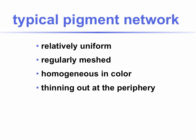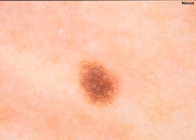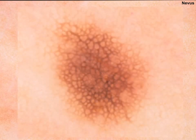The typical pigment network is relatively uniform, regularly meshed, and homogeneous in color. It thins out at the periphery. Another example — a junctional nevus clinically. Dermoscopically, a regular pigment network thinning out towards the periphery at higher power.